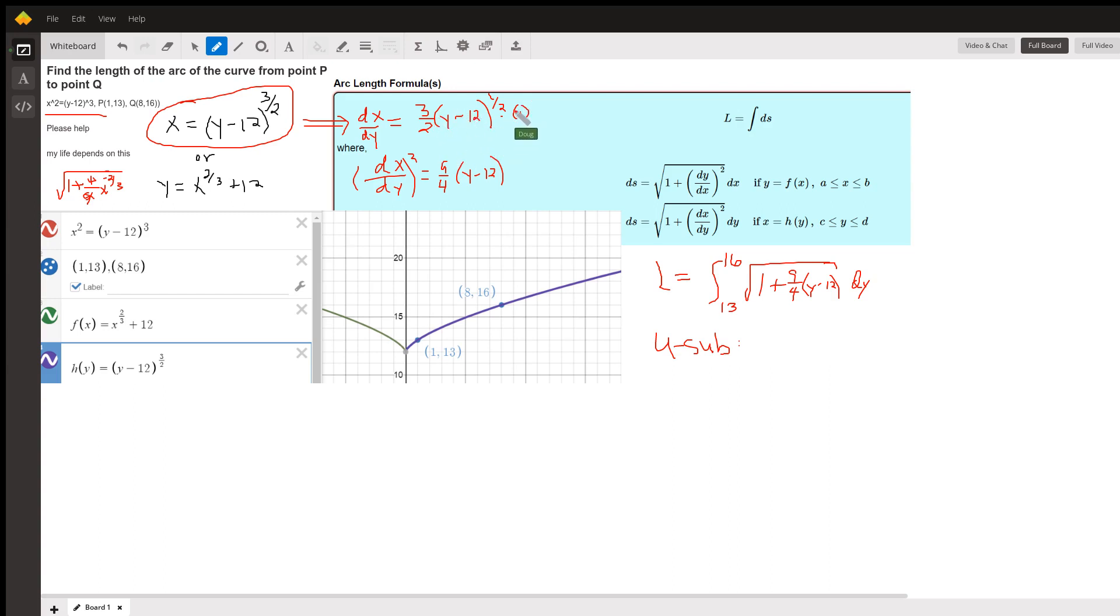Square that expression, you get 9 fourths, square the y minus 12 to the 1 half, you just get y minus 12. You could write this as 9 fourths y minus 27.